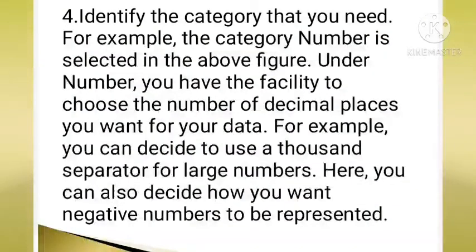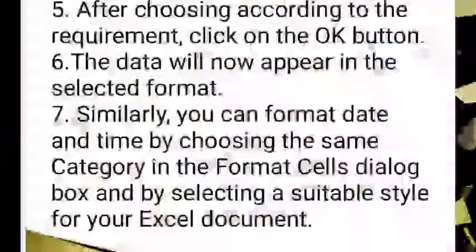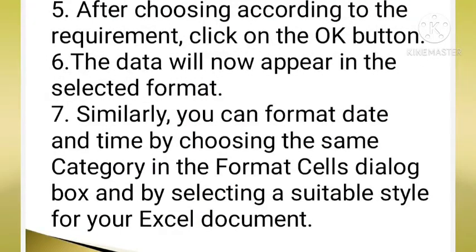Fourth step, you can look for the category you need. For example, the category number is selected. Under number, you have the facility to choose the number of decimal places you want for your data. For example, you can decide to use a thousand separator for large numbers. Here, you can also decide how you want negative numbers to be presented. Fifth step, after choosing which we require, click on the ok button.